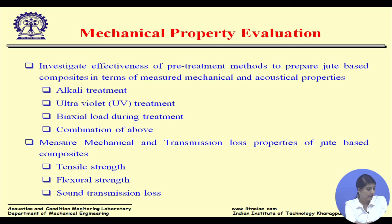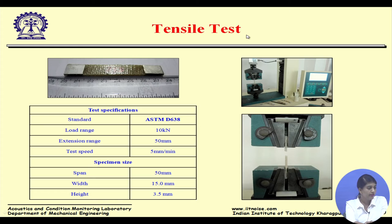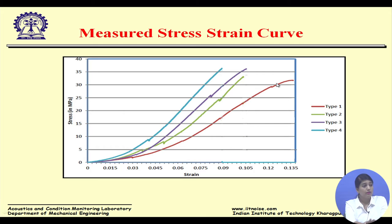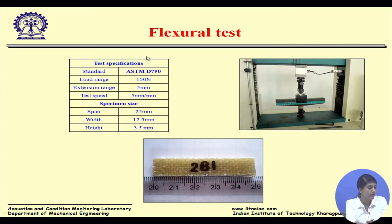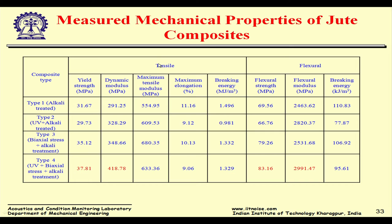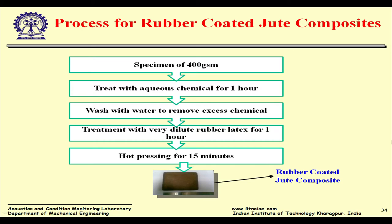Manzil measured mechanical properties and transmission loss of four composites using ASTM standard tensile and flexural tests. Type 1 (alkali only) shows weaker strength compared to Type 4. Type 2 is UV plus alkali treatment, and Type 4 is biaxial treatment. Type 4 always shows the best result due to its bonding, showing good mechanical properties as well as good sound transmission class values.